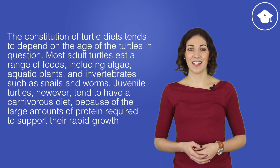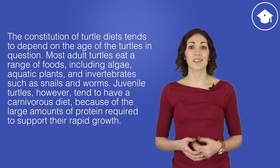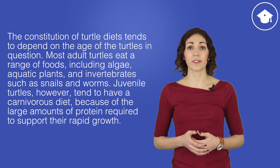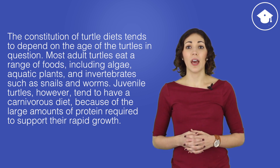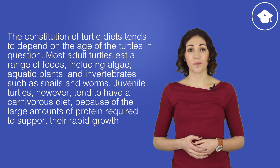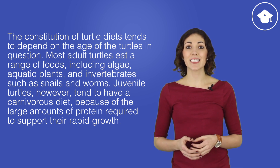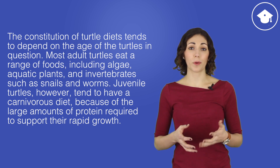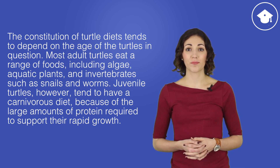Let's look at an example. 'The constitution of turtle diets tend to depend on the age of the turtles in question. Most adult turtles eat a range of foods, including algae, aquatic plants, and invertebrates, such as snails and worms. Juvenile turtles, however, tend to have a carnivorous diet because of the large amounts of protein required to support their rapid growth.' That's a pretty complicated passage, and you might not know what every word in it means. That's totally okay.